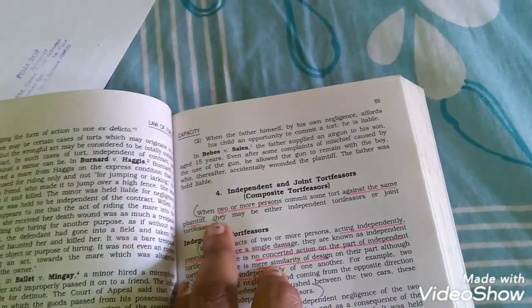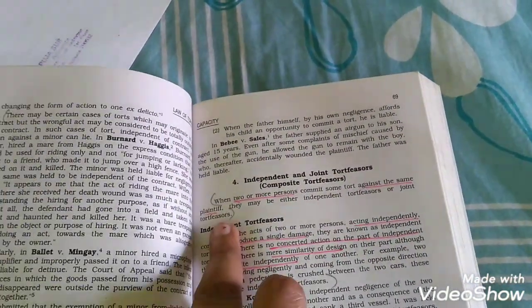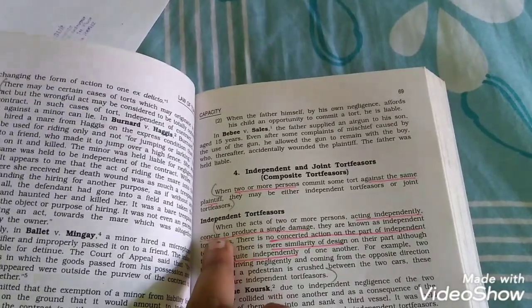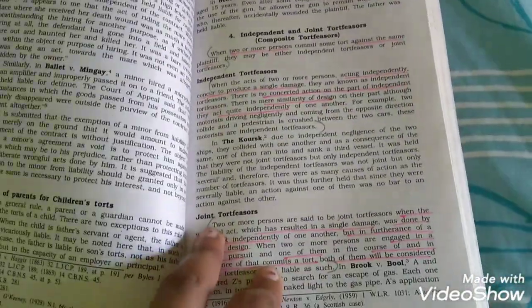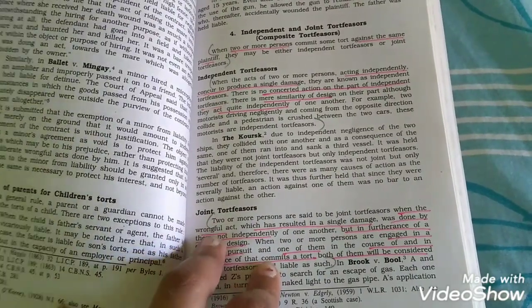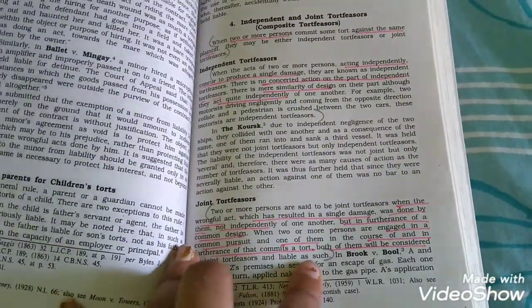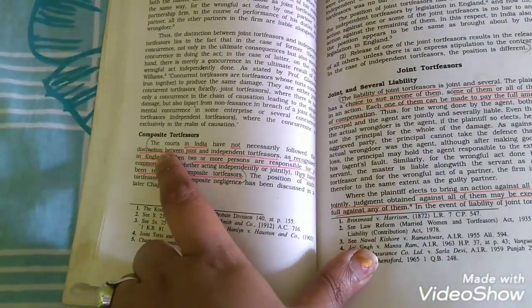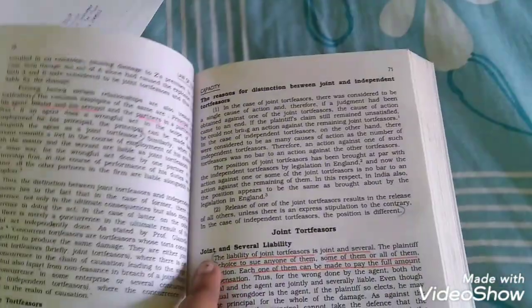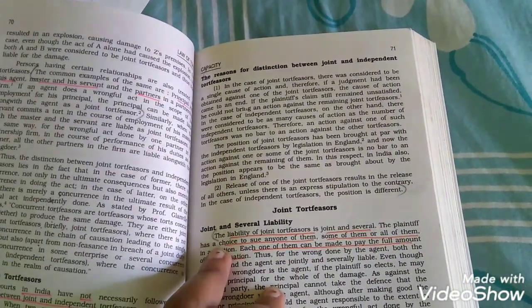When two or more persons commit from there to tortfeasors. When the act of two or more persons from there to tortfeasors. Two or more persons are said to be joint tortfeasors when from there to libel as such. Page: compositor, feeders. The courts in India from there to tortfeasors.